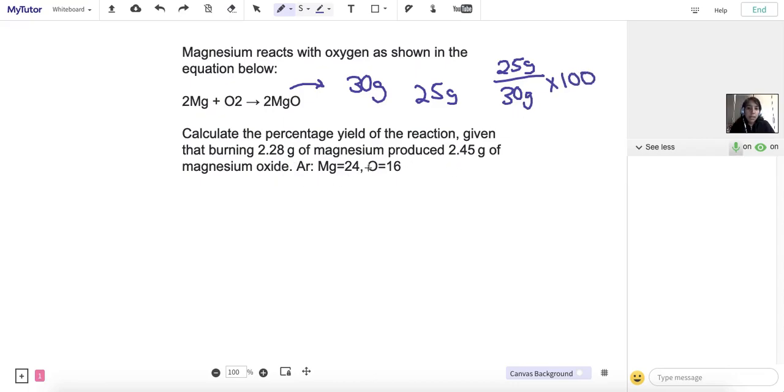So in this case here, we can see that 2.45 grams of magnesium oxide is produced, and that's our mass produced. We would then divide that by the total theoretical mass. That's just like your typical masses from equations that we usually calculate. And we multiply by 100 because it's a percentage.